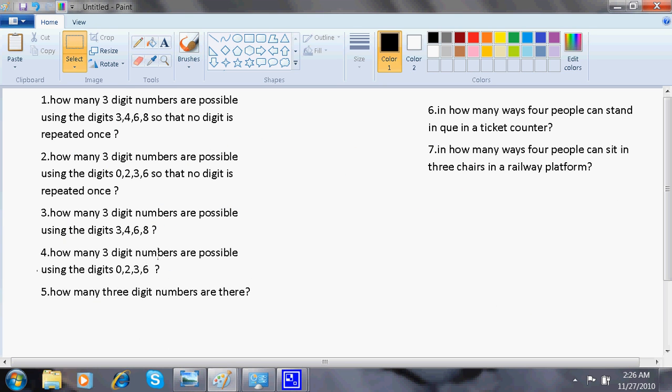Now, I will come to a question. How many three digit numbers are possible using the digits 3, 4, 6, 8 so that no digit is repeated once. Let me say these are the places. And I am given the digits 3, 4, 6, 8.